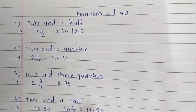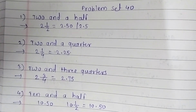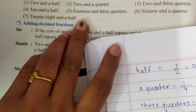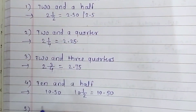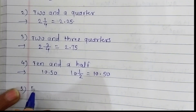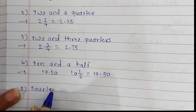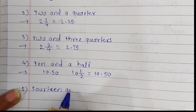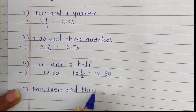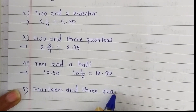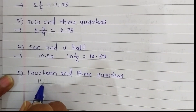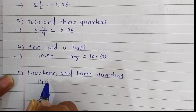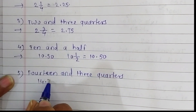The fifth question is fourteen and three quarters. The answer of this question is fourteen point seventy-five.